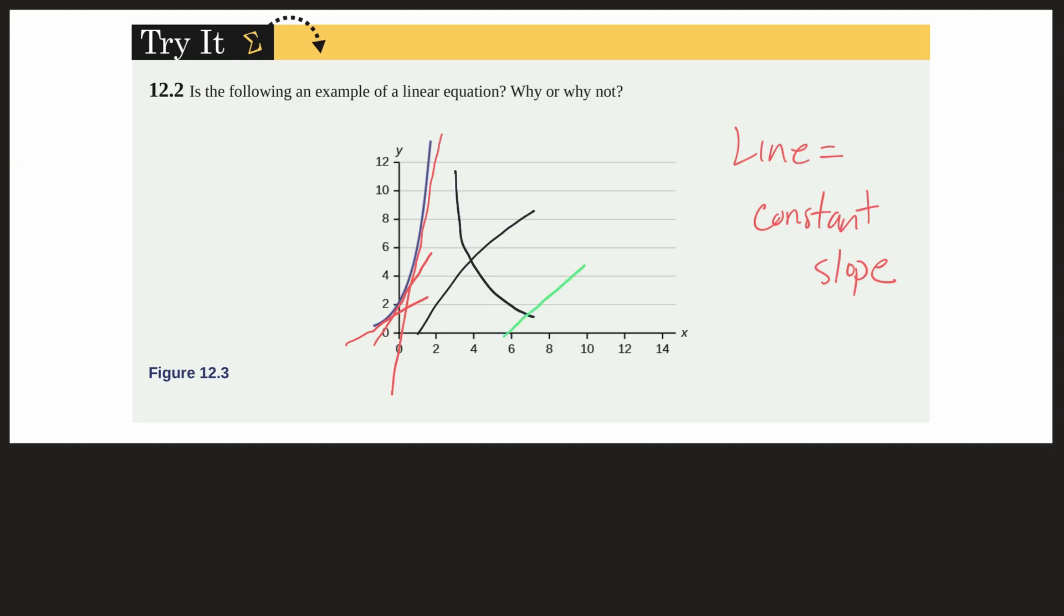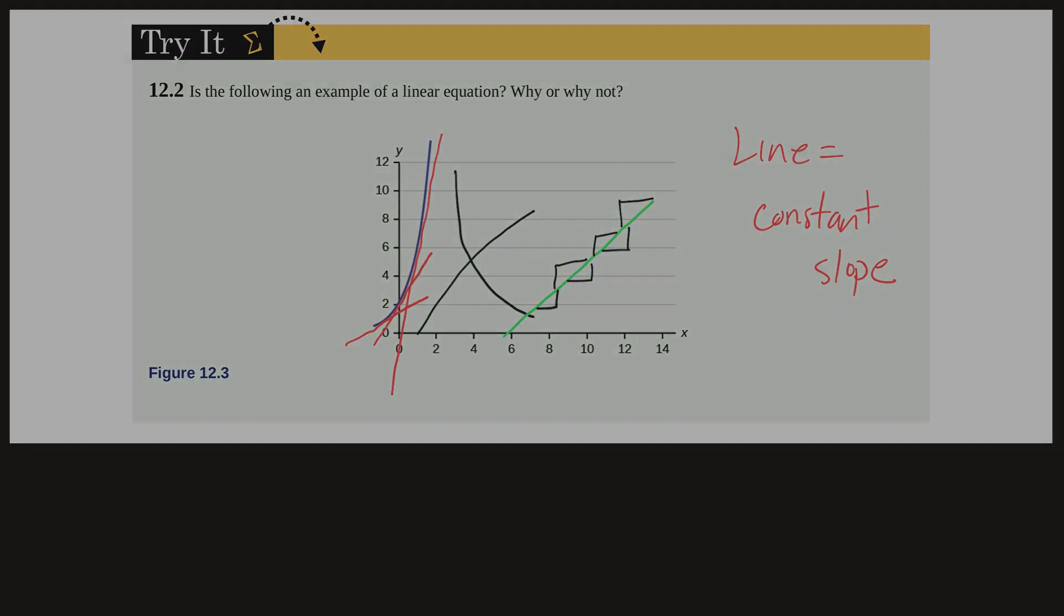So here is a straight line. And what we mean by constant slope is that wherever we are on the line the slope is the same. Here or here. We could even work the other side of the line. The slope is the same no matter where we are. So in sum, a linear equation is a straight line that has a constant slope throughout.